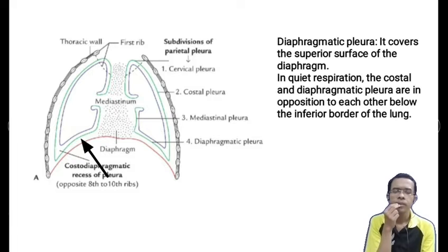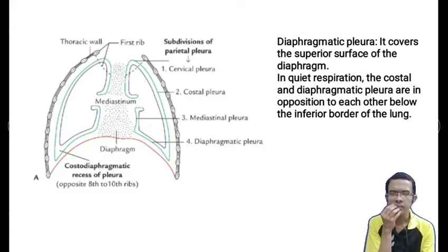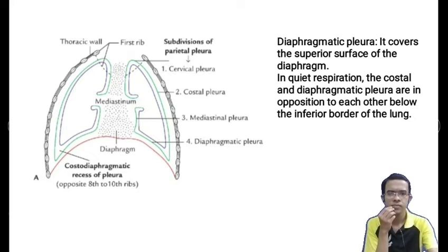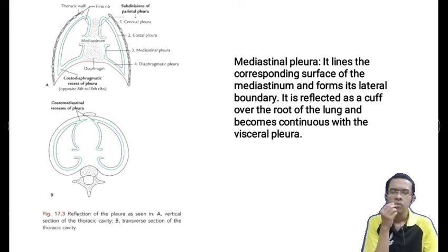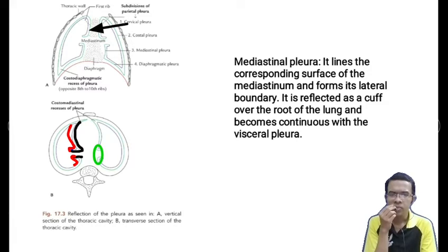The diaphragmatic pleura covers the superior surface of the diaphragm, and in quiet respiration the costal and diaphragmatic pleura are in opposition to each other below the inferior border of the lung. The mediastinal pleura lines the corresponding surface of the mediastinum and forms the lateral boundary of the mediastinum. It is reflected as a curve over the root of the lung and becomes continuous with the visceral pleura.